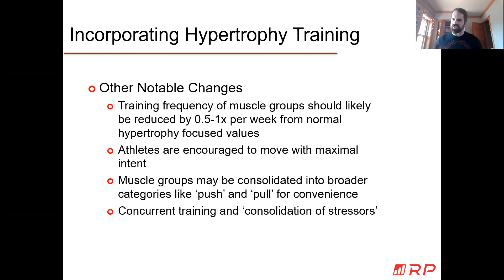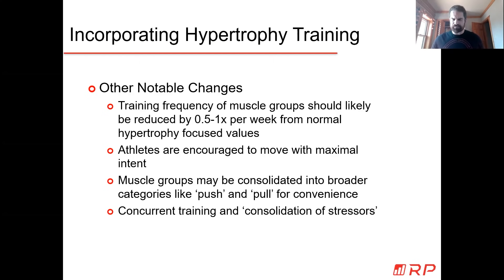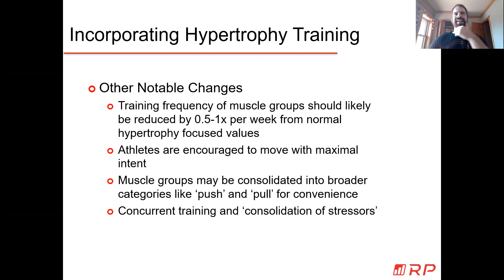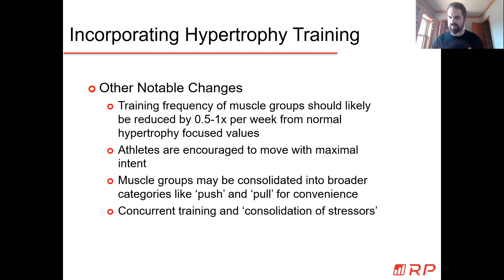Sometimes it's easier to consolidate some of our muscle groups. In physique training, you might be breaking down every single muscle group into MEVs, MAVs, etc. For sport training, that's sometimes unnecessarily complicated. You might just consolidate down into push, pull, and legs, or anterior chain, posterior chain, and legs. It's easier than trying to account for every muscle a clean pull works. Sometimes it's just easier to say: this week we're getting ten sets of upper body push - a combination of different pressing movements. You can certainly be more specific, but often it's unnecessarily complicated.